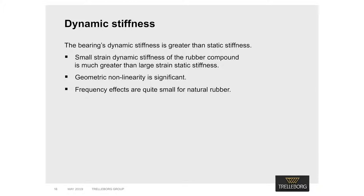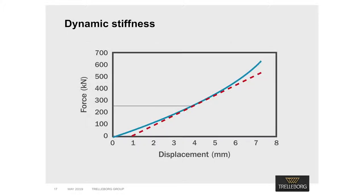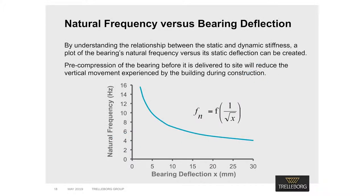The small strain dynamic stiffness of the rubber compound is much greater than the large strain static stiffness. Non-linearity arising from a bearing's geometry is significant, though much of the stiffening seen in a static force deflection plot arises from the lead-in associated with slight misalignment of the bearing faces. For natural rubber, the effects of frequency are quite small. The ratio between dynamic and static stiffness is termed the dynamic to static ratio, and the dynamic stiffness ratio is typically 1.4. With a clear understanding of this relationship, we are able to generate a plot of the bearing's natural frequency versus its static deflection, which is useful in establishing the level of vertical movement the building will experience.